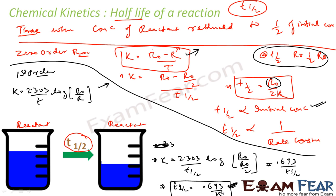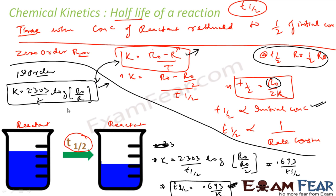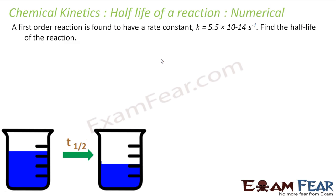T½ = 0.693 / K is a very commonly used formula, especially for first-order reactions. The two most important formulas to remember are: for zero-order, K = (R₀ − R) / T; and for first-order, K = 2.303 / T × log(R₀ / R). Even if you don't memorize the half-life formulas, you can derive them quickly from these.